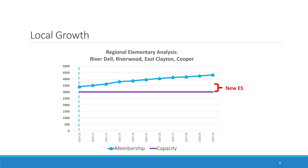Looking at a more local example, we have Riverdale, Riverwood, East Clayton, and Cooper. We are comparing your enrollment or membership to capacity — how many seats are available overall in this region. There is a gap between those, with capacity being the purple line underneath and membership being the line on top, representing the number of students.